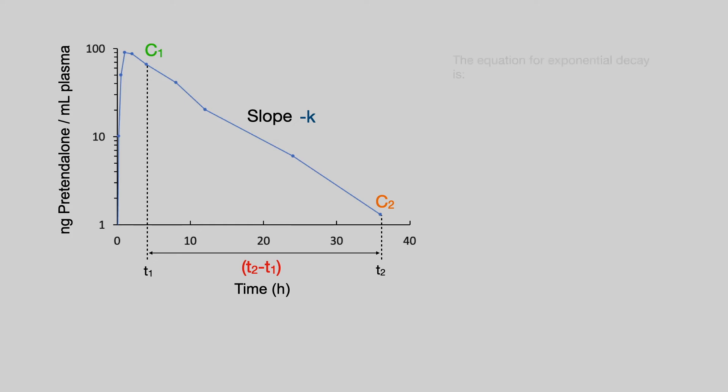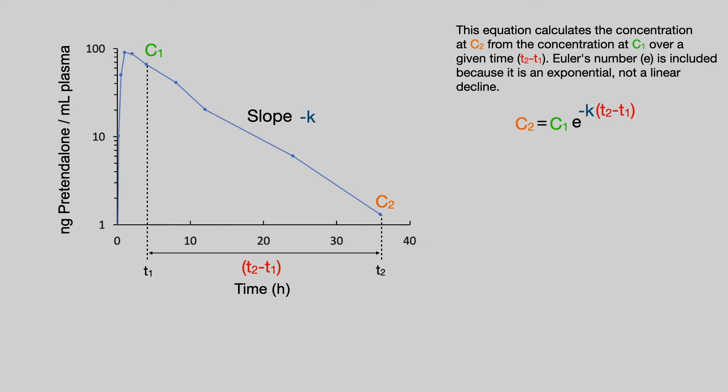We are now going to use the standard equation for exponential decay. You will see this equation anywhere that there is exponential decay. It could be first order kinetics. It could be radioactive decay. It's a standard and common equation. And the equation is C2 equals C1 multiplied by Euler's number to the power of minus K multiplied by that time difference.